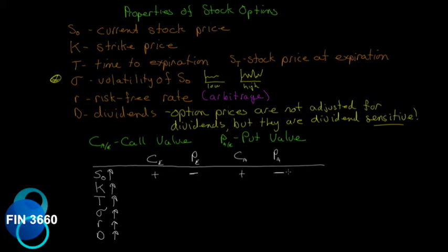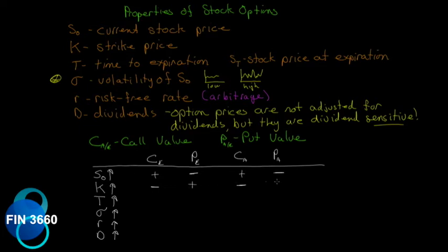Now let's look at the strike price changing — everything stays the same, but instead of buying a 50 call you decide to buy a 55, 60, or 65 call. The higher you go on the strike, the further out of the money you are, so the call price drops. But for a put, if the stock price stays the same and the strike price increases — say from a 50 put to a 60 or 70 put — it becomes more and more in the money, so the put value increases.